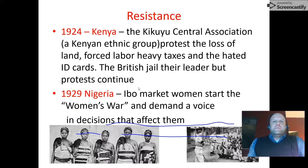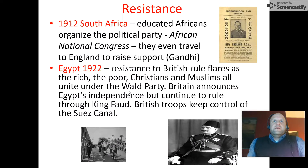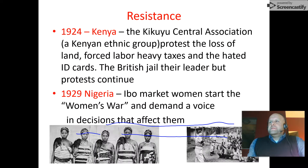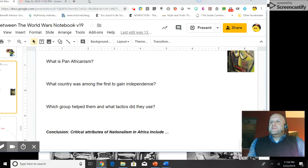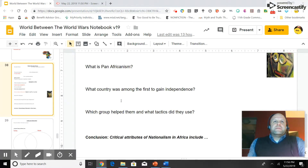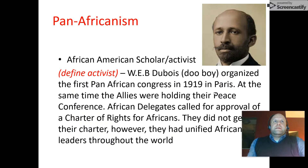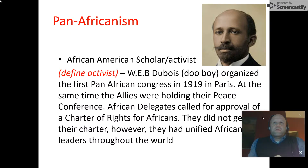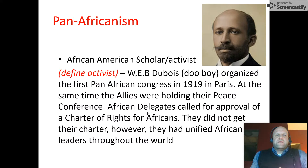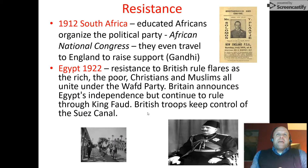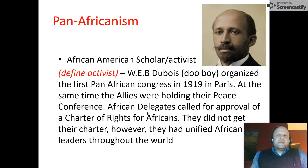Part two of the video on nationalism in the interwar period in Africa. We're leaving off with trying to find what Pan-Africanism is, and the idea that W.E.B. Du Bois organized the Pan-African Congress parallel with the Paris Peace Conference, calling for a charter of rights for Africans in South Africa. It was largely unsuccessful, but it would grease the wheels for later independence in Africa.